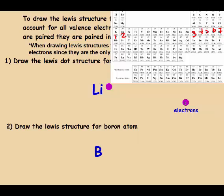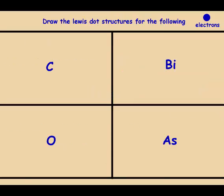So boron should have three valence electrons. The first two get paired, and the third one goes on any of the remaining sides. You can try these four on your own — restart when you have answers.